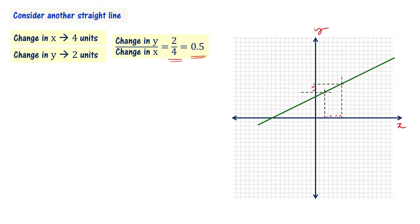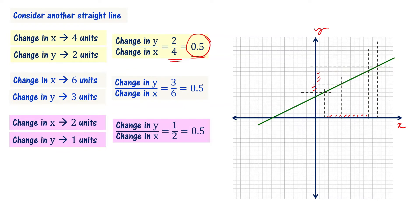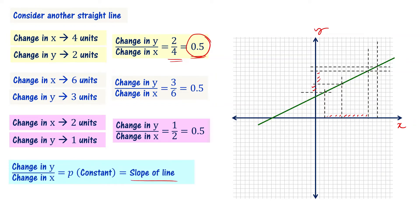Let's check whether 0.5 is going to be constant for other cases or not. Now you look at this: change in x is 6 units and change in y is 3 units. So change in y by change in x is 0.5 again. Similarly, you can see here change in x is 2 units and change in y is 1 unit. That's why change in y by change in x equal to 0.5. So this is the slope of the line — in this particular case, 0.5 is the constant, that is the slope of the line.